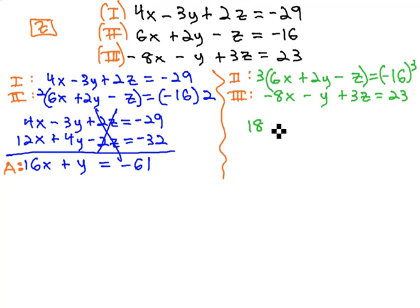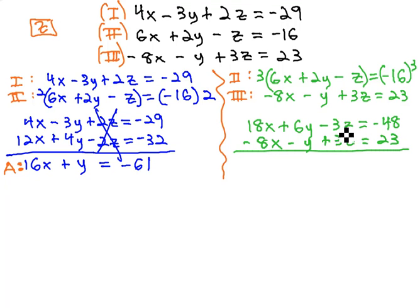The second equation is now 18x plus 6y minus 3z equals negative 48. The other equation, still the same, negative 8x minus y plus 3z equals positive 23, and when we combine those, the z's will eliminate, and we have 10x plus 5y equals negative 25. And this is our B equation.